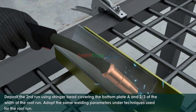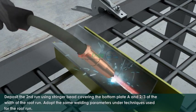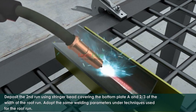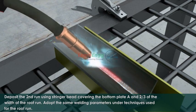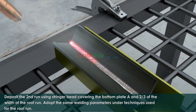Deposit the second run using stringer bead covering the bottom plate A and two-thirds of the width of the root run. Adopt the same welding parameters and techniques used for the root run.